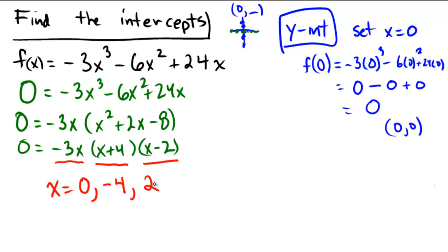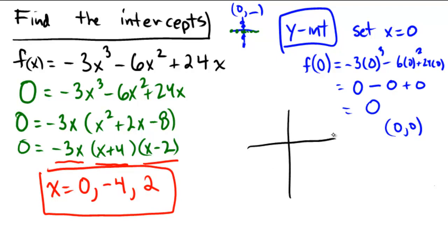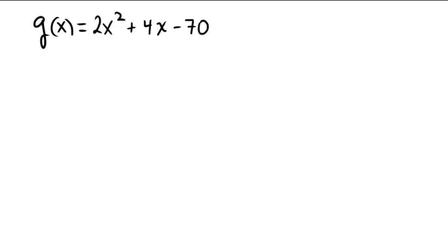So whatever this graph is, it's going to cross the x-axis at zero, negative four, and two. In a rough sketch, we know it crosses at zero, negative four, and two — and hits the y-axis also at zero. It's a negative cubic function, so it will look something like this. This information is quite useful and gives us a lot of information about the graph. Now pause the video and try the intercepts of g(x) = 2x squared plus 4x minus 70.